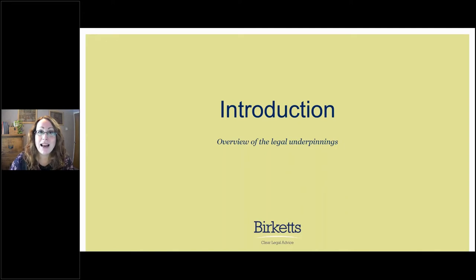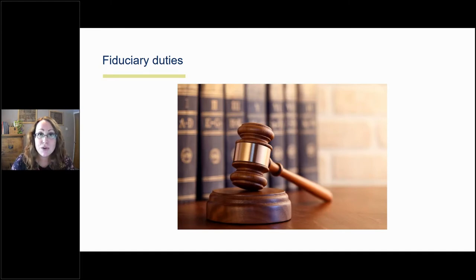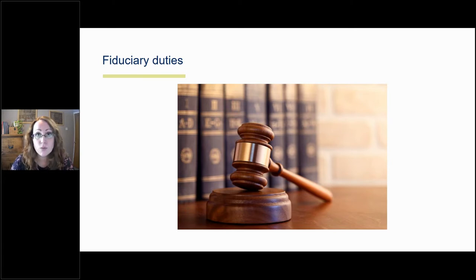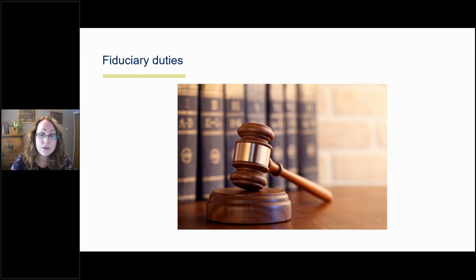To begin with, a little rattle through the legal underpinnings. The first point is that the duties around personal benefits and conflicts of interest derive from fiduciary duties. A fiduciary is someone who has undertaken to act for or on behalf of another in a particular matter, in circumstances which give rise to a relationship of trust and confidence. Anyone acting in their capacity as a charity trustee, regardless of the legal form — whether a charitable company, a trust, an unincorporated association, a CIO or some other legal form — is a fiduciary. The duty to avoid conflicts of interest derives from fiduciary duties.